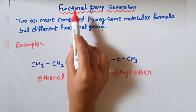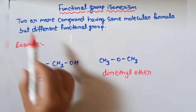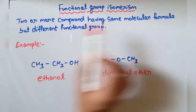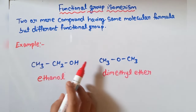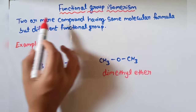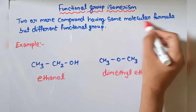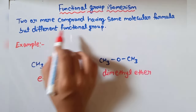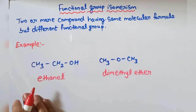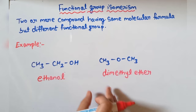Now see the next type, that is functional group isomerism. Definition: two or more compounds having the same molecular formula but different functional groups.